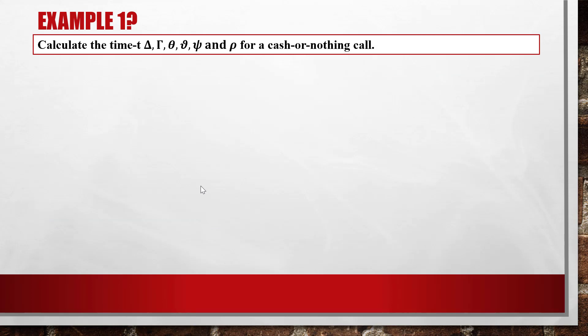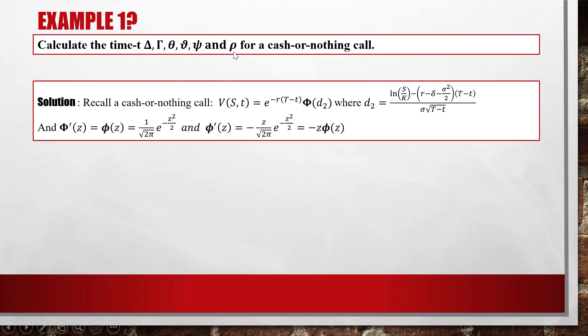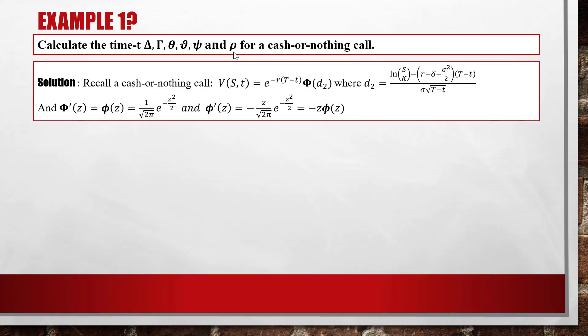Let's work through Example 1: calculate the time-t Delta, Gamma, Theta, Vega, Psi, and Rho for a cash-or-nothing call. In this video I'm going to calculate four of them — Delta, Gamma, Theta, and Psi — as the last two are easier. First, recall the cash-or-nothing call price function: V(t) equals e to the minus r times (capital T minus little t), times capital Phi of D2.